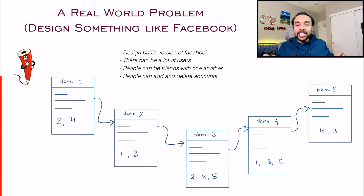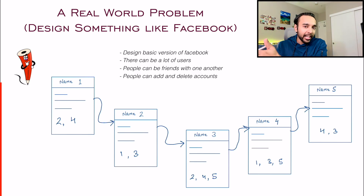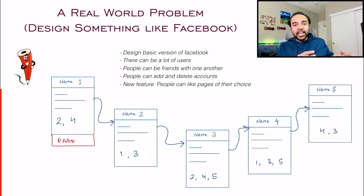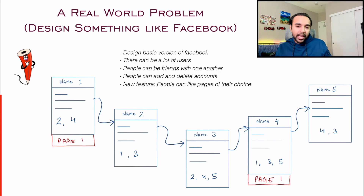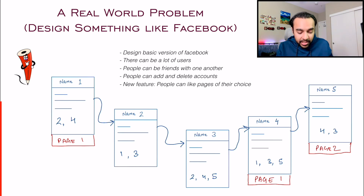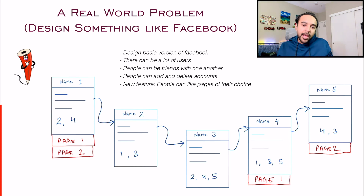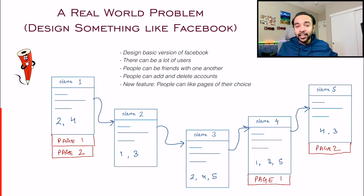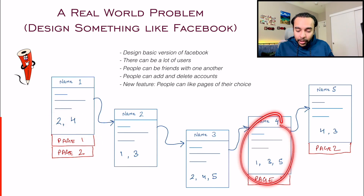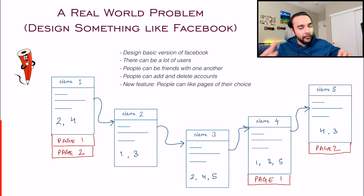Then you have to add a new feature — pages on Facebook. Someone can like a page. Person one likes page one, person four also likes page one. Person five likes page two, and person one also likes page two. So far you have been able to take advantage of your lists. If you want to look at the profile of person one, you can see their basic information, their friends, and the pages they like. Similarly for person four and person five — you can give all of this information very easily.